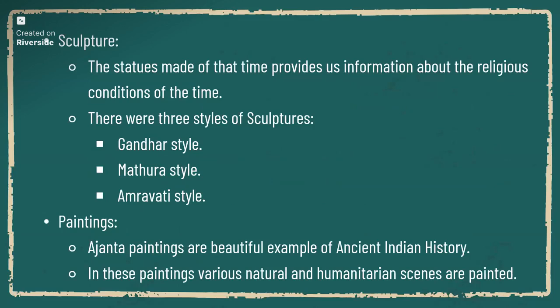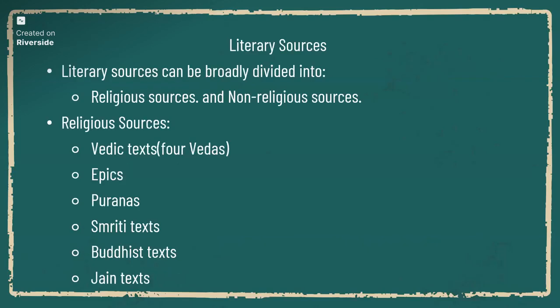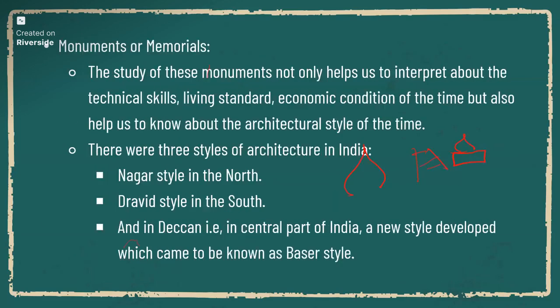Sculptures are statues and other idols created using stone, metals, or clay. There are three different styles: Gandhara, Mathura, and Amaravati. Regarding paintings, Ajanta and Ellora caves have a unique style using natural colors to depict natural and human scenes painted in the caves. These are all archaeological sources.